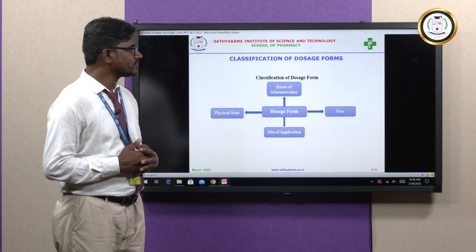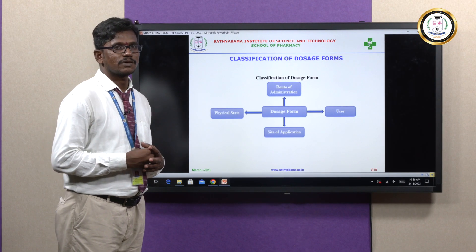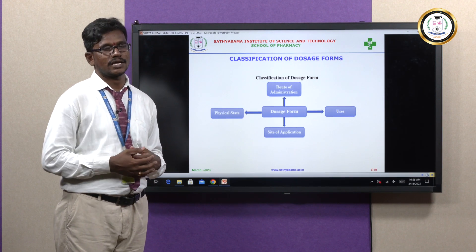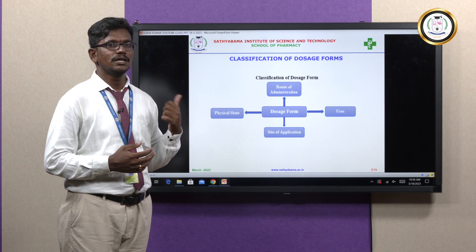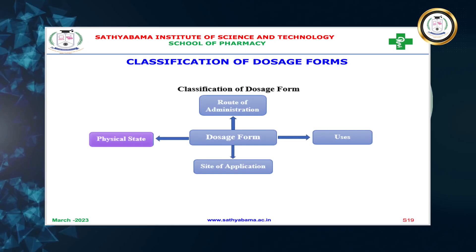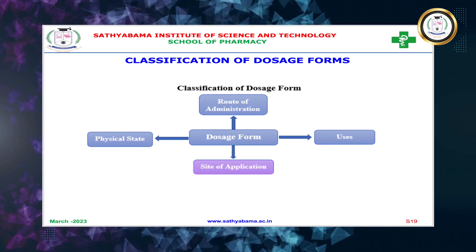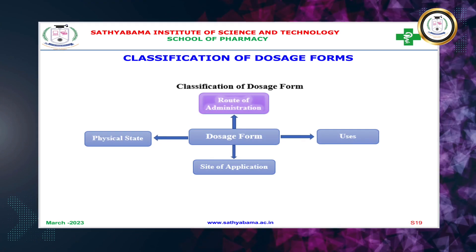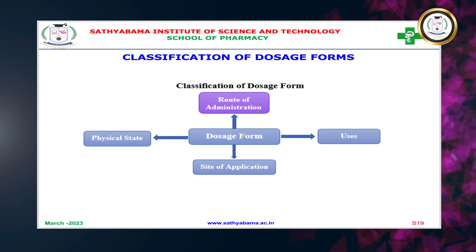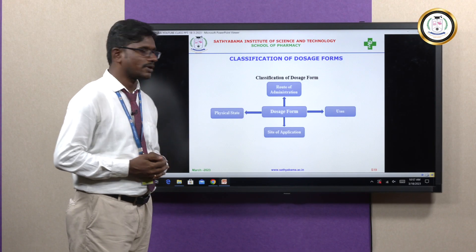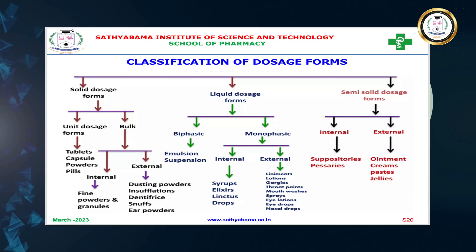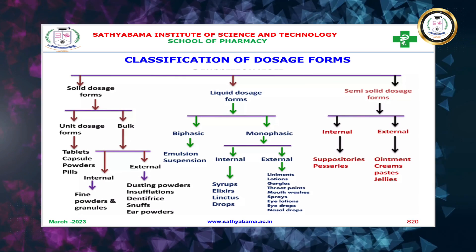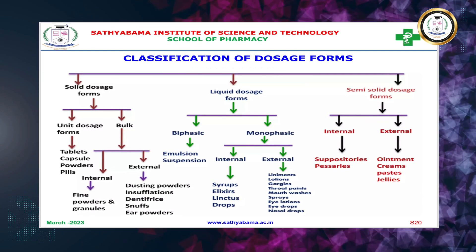Coming to the classification of dosage forms, the dosage forms can be broadly classified into various types based on the physical form, based on the use, based on the site of application, and based on the route of administration. Now let us discuss one by one. First, based on the physical form, we can categorize the dosage forms into three types.